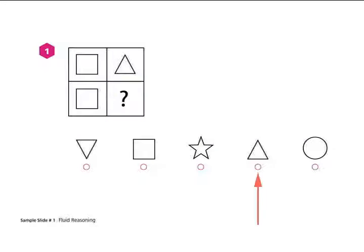The answer is the fourth choice. These two shapes on the left are the same, and so we need another one of these to make these two shapes the same over here.